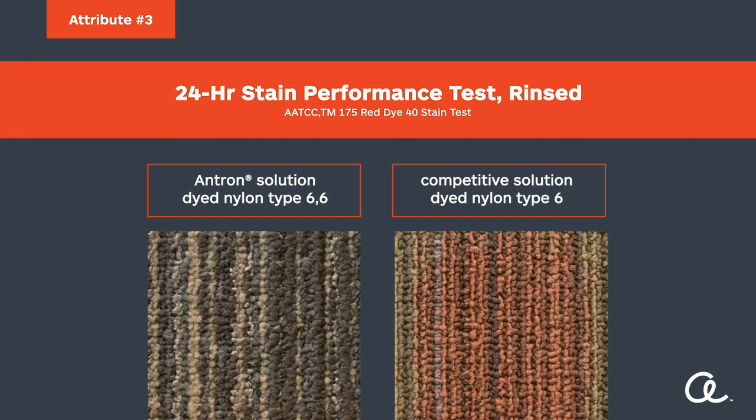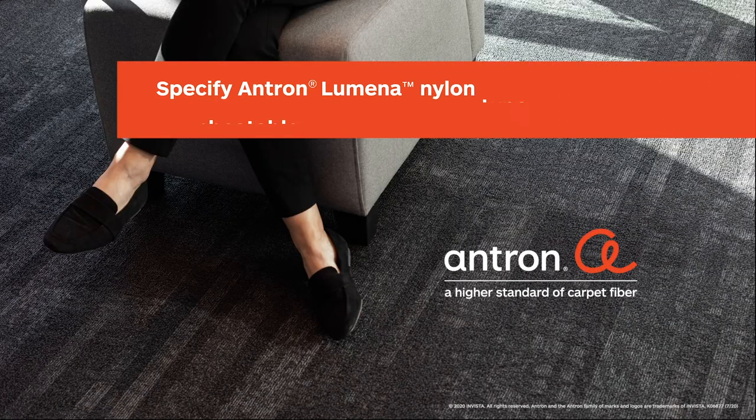Both carpet samples are placed with a red fruit beverage for 24 hours, and then cleaned only with water. As shown, the nylon type 6-6 carpet sample is more resistant to stains than the nylon type 6. Carpets of Antron solution-dyed nylon type 6-6 can have up to 10 times better stain resistance than carpets of the leading competitive solution-dyed type 6 nylon. All Antron solution-dyed fibers must score 8.0 or higher on the AATCC Red 40 stain scale to be certified as a carpet of Antron.